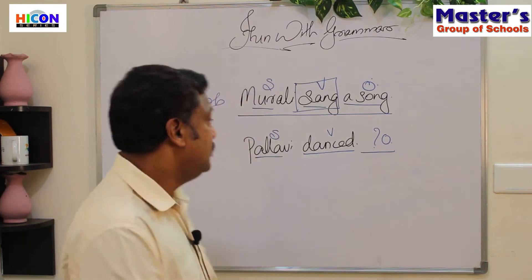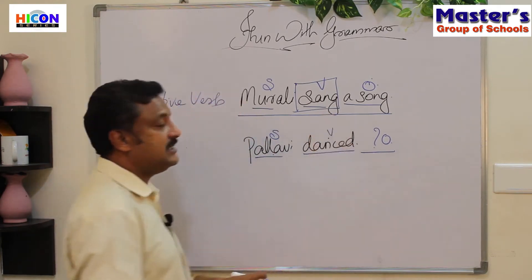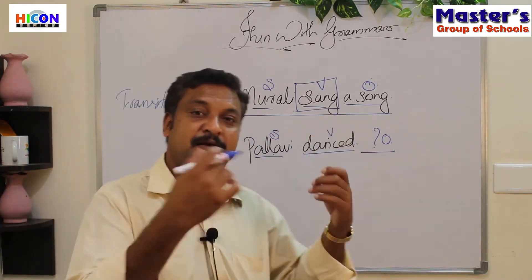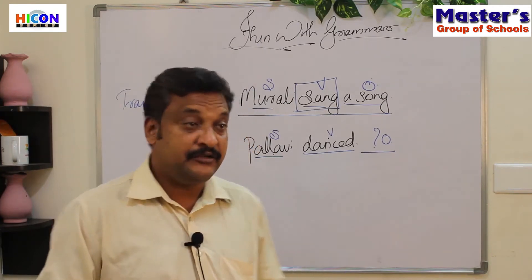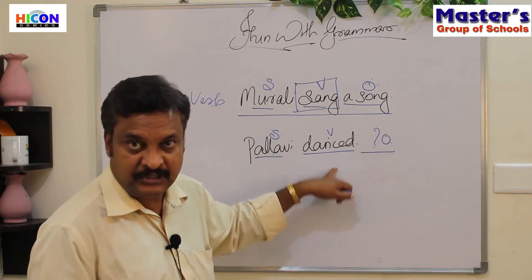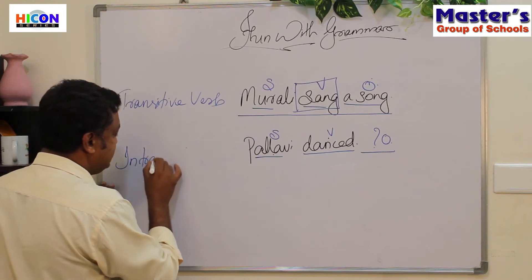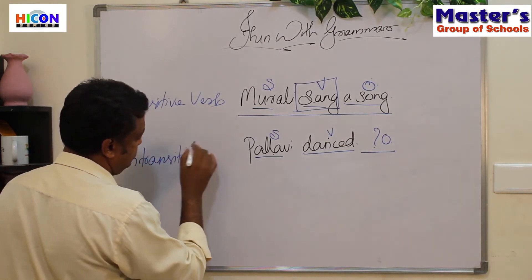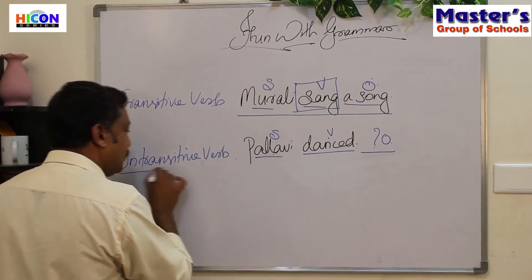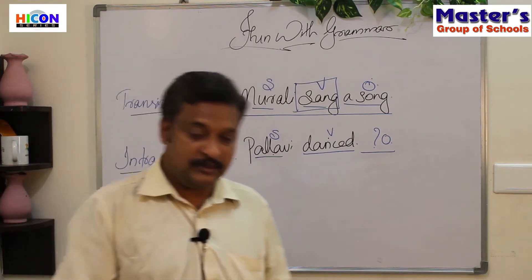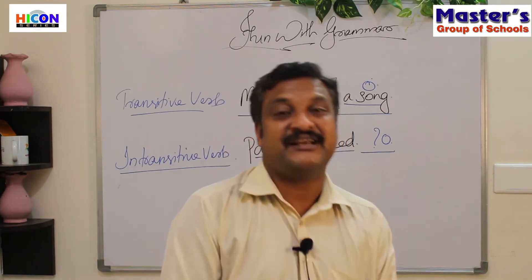Now look at the second sentence — only the subject and the verb are there, there is no object. If there is no object after a verb, then that verb is called an intransitive verb.